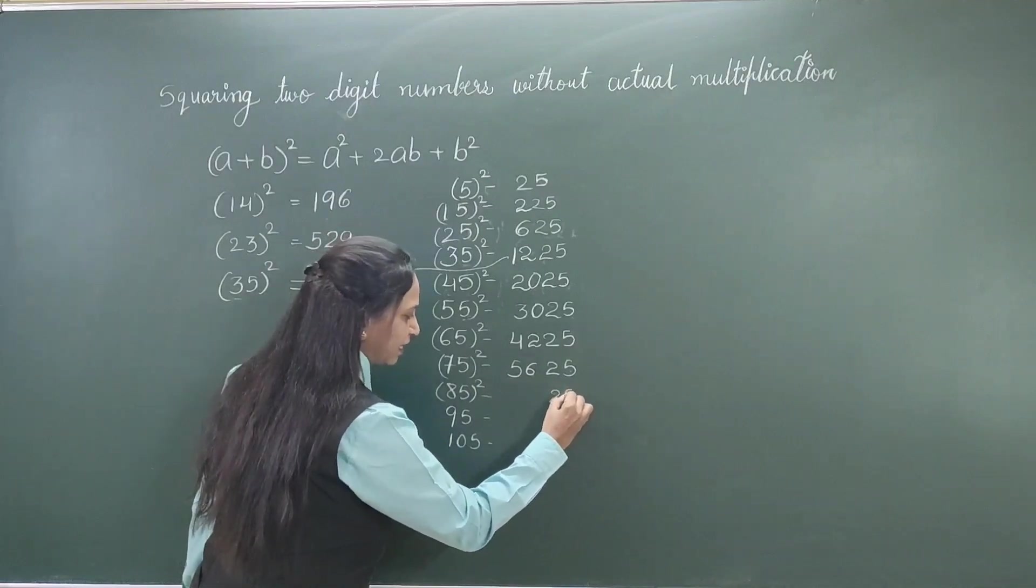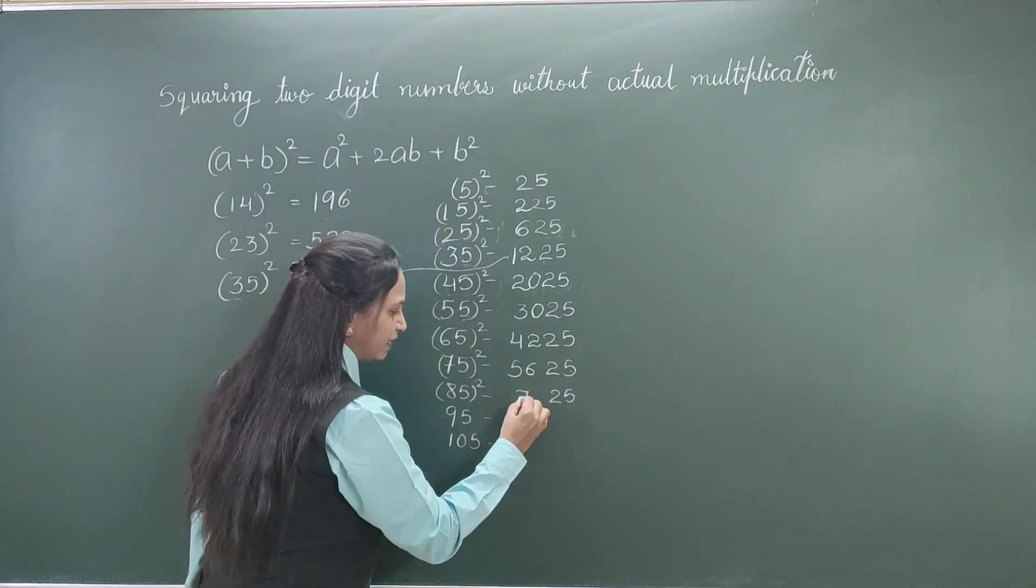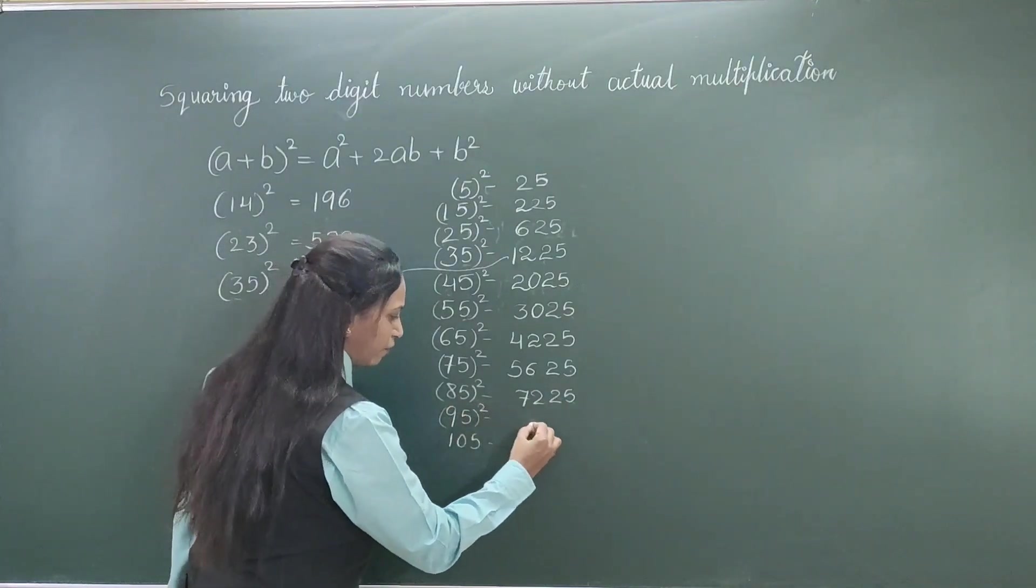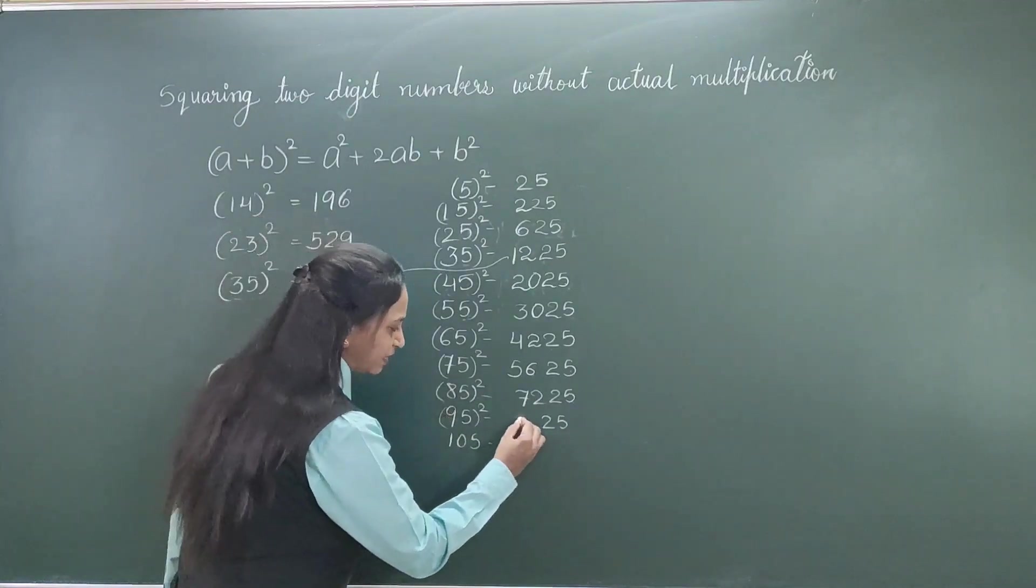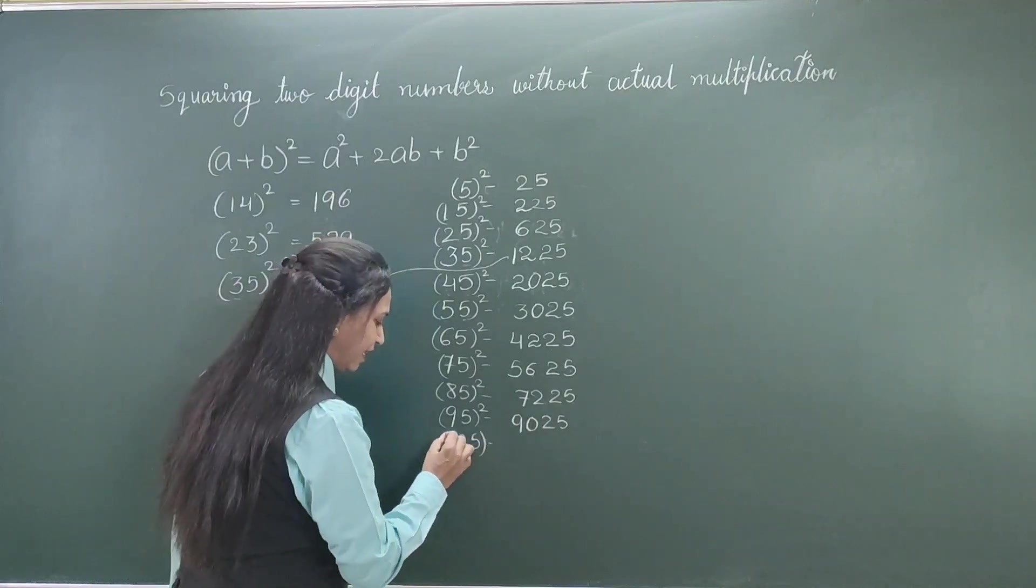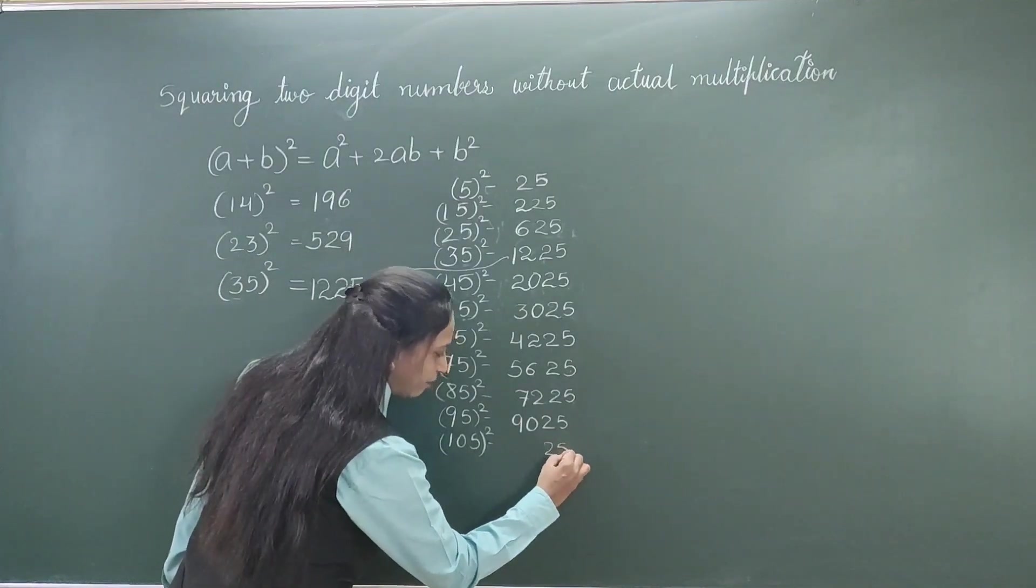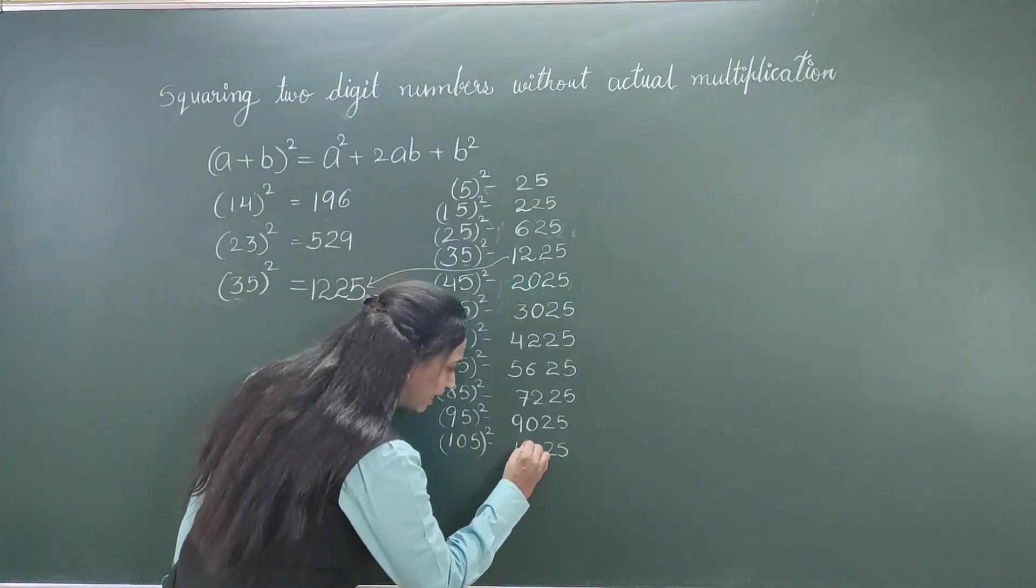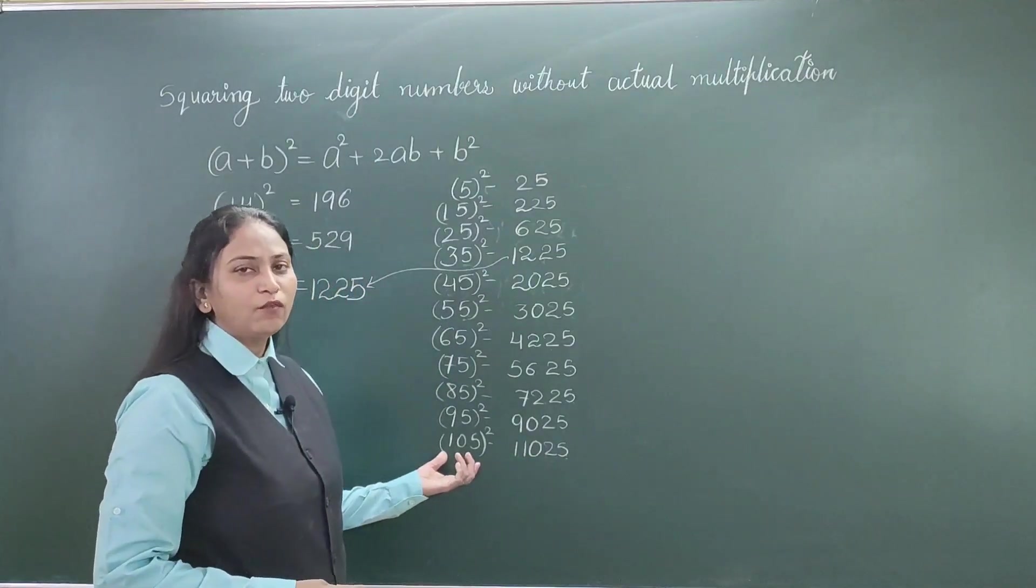Again. For 85. Last 2 digits are 25. And 8 × next number. 8 × 9 = 72. Here, square of 95. Last 2 digits are 25. And 9 × next number. That is 9 × 10 = 90. And lastly, 105. Last 2 digits, again, it will remain 25. And 10 × 11 = 110. So, this is 11025.